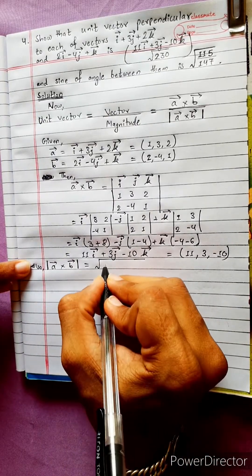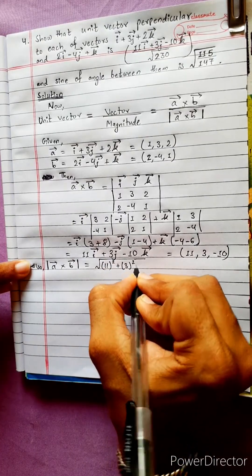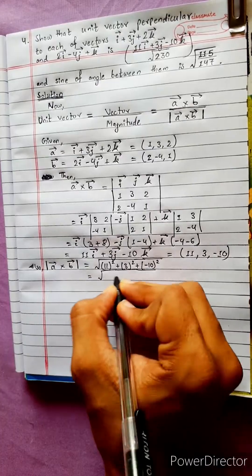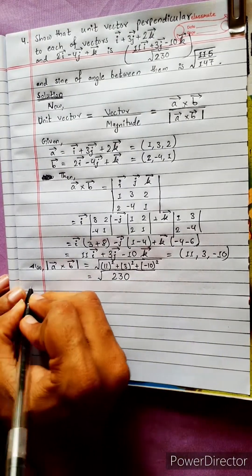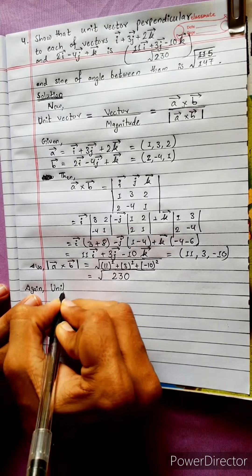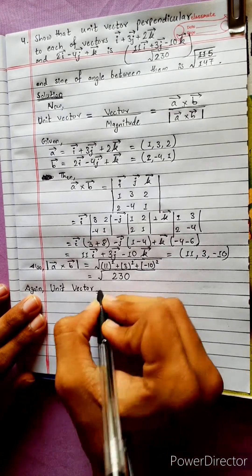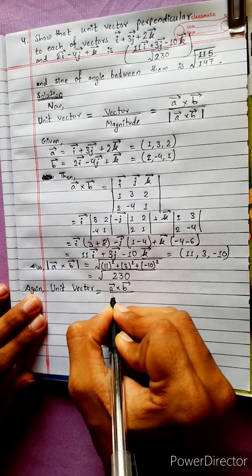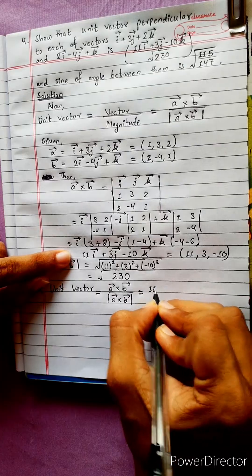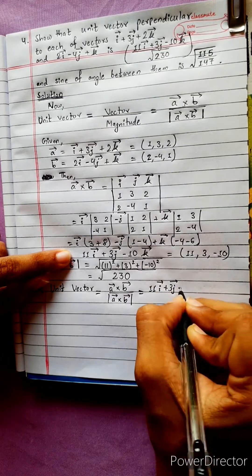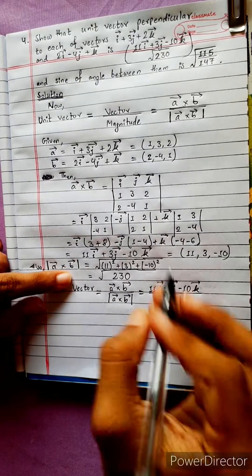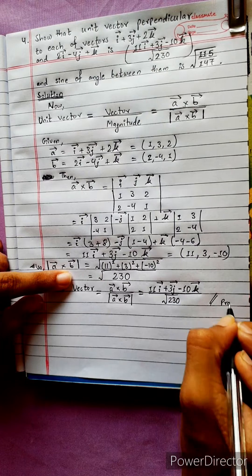The magnitude is the square root of the sum of squares. Using the calculator directly, the unit vector equals the cross product divided by the magnitude: a cross b equals 11i plus 3j minus 10k divided by the magnitude root.